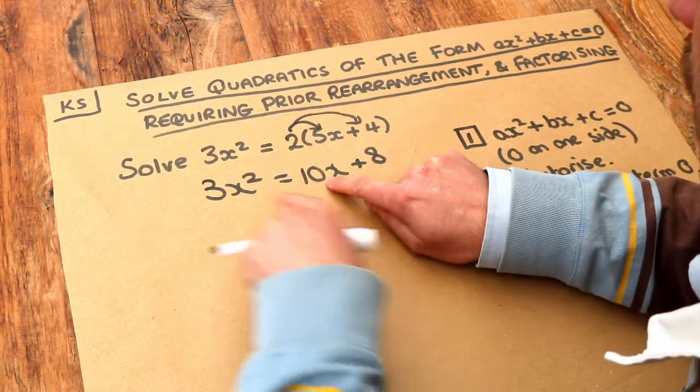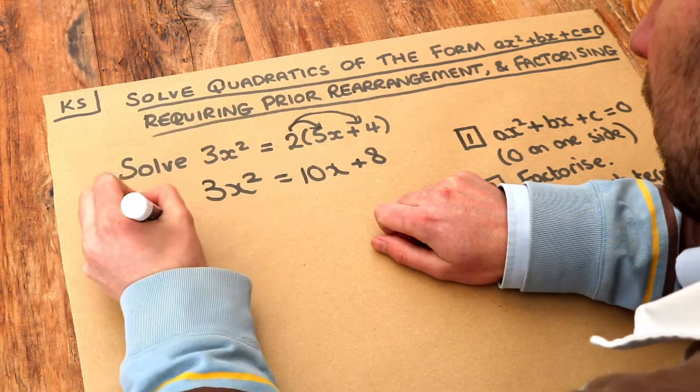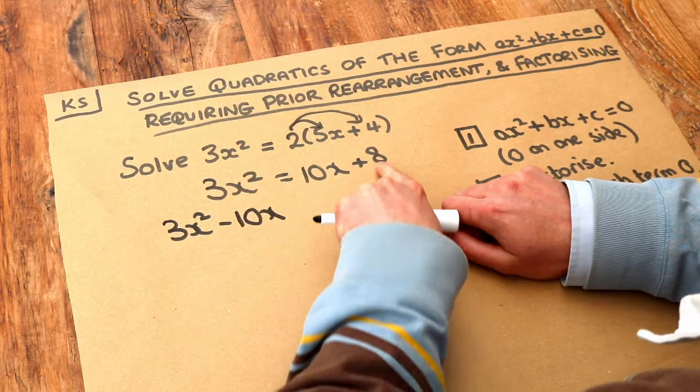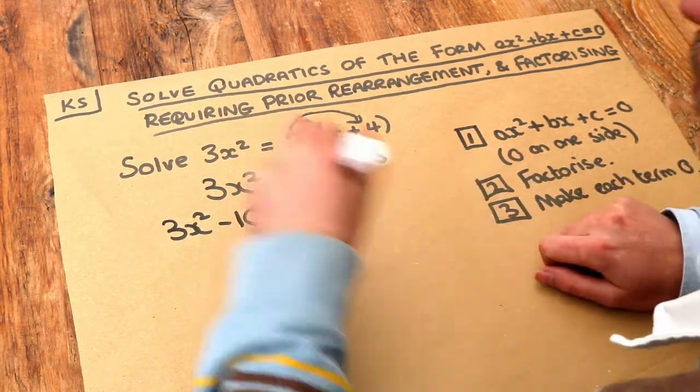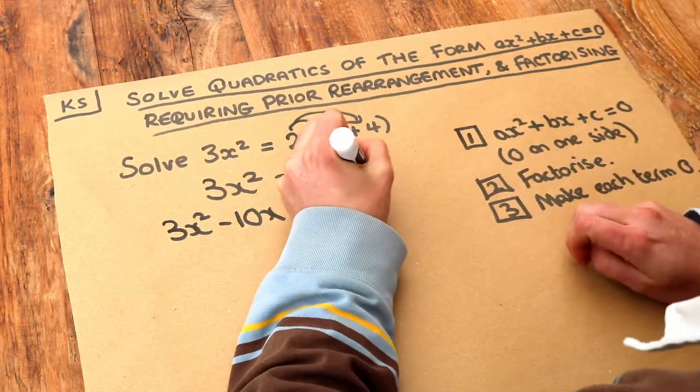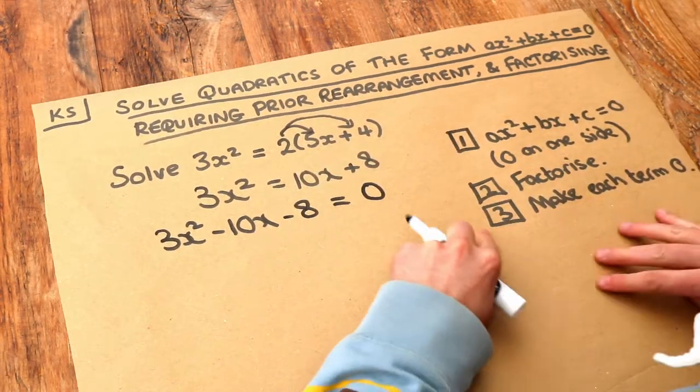So to get rid of that 10X here, we're going to subtract 10X from each side. So we're going to get 3X squared minus 10X. And then, to move this 8 over here, we subtract 8 from both sides. So we'll have minus 8 here. And now we've got nothing left on the right-hand side.